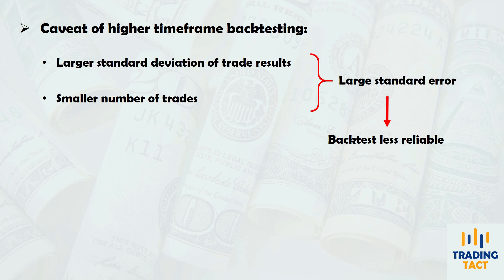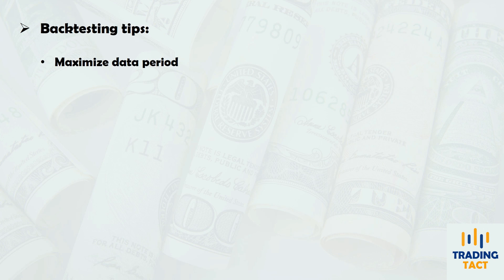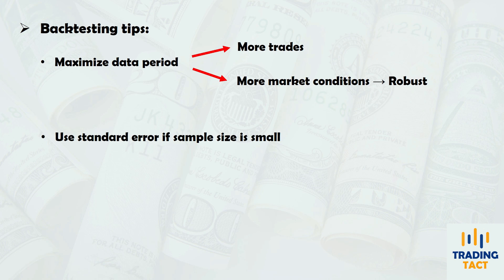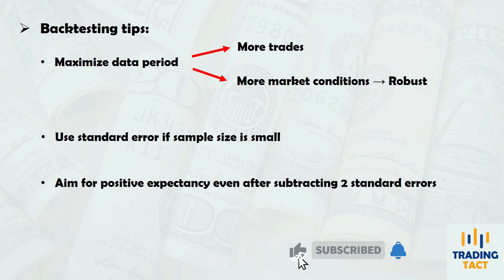Suppose you are trading a daily trend-following strategy that was developed on a small sample of trades, and it starts underperforming. Market conditions could have changed, or perhaps your backtest uncertainty is playing out in real-time. So in general when backtesting, always try to make your data period as long as possible — this gives you more trades, and also tends to cover more market conditions, which helps improve your strategy's robustness. If you suspect your sample size is too small, you can use standard error to quantify the resulting uncertainty. If your average trade is still positive after subtracting two standard errors, you can be more confident that your strategy will be profitable over the long term.